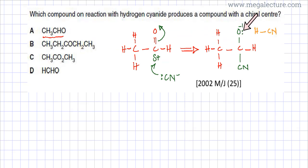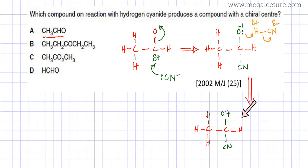In the second step, this oxygen has a negative charge. An HCN molecule approaches — it has a slight positive hydrogen and a slight negative CN group — so the electrons on the oxygen are attracted to that hydrogen. Eventually, this H gets bonded to the oxygen atom, and the negatively charged oxygen bonds with the hydrogen from HCN to form OH.